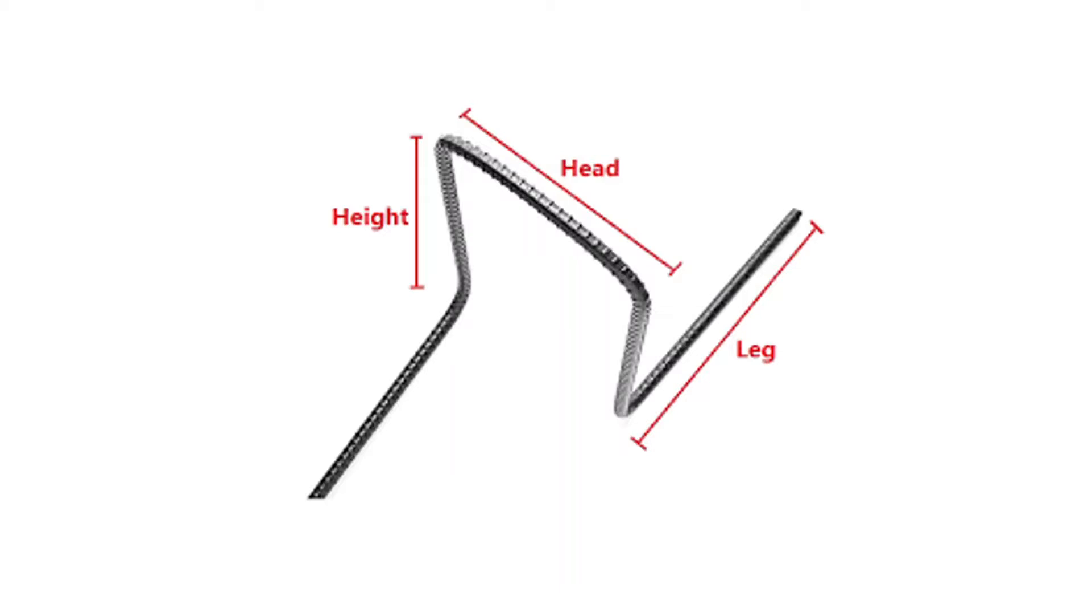The top horizontal part of chair bar on which the upper cage reinforcement rests is called head of chair. The vertical distance of chair bar is called the height of chair. The bottom vertical part of the chair bar is known as the leg of chair.